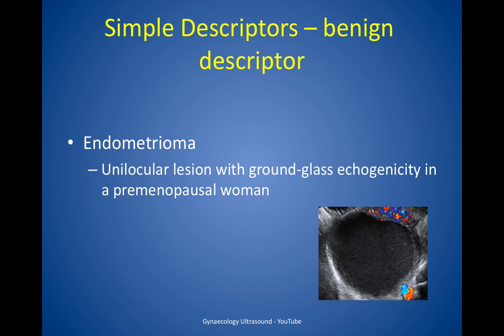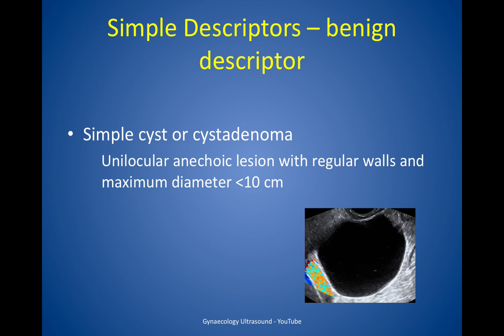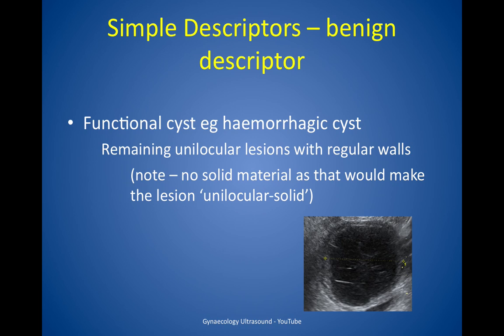An endometrioma described using IOTA criteria would be a unilocular lesion with ground glass echogenicity in a pre-menopausal woman. A benign cystic teratoma or dermoid would be described as a unilocular lesion with mixed echogenicity and acoustic shadows in a pre-menopausal woman. A simple cyst or cyst adenoma is a unilocular anechoic lesion with regular walls and a maximum diameter of less than 10 centimetres. A functional cyst like a hemorrhagic cyst covers the remaining unilocular lesions with regular walls.